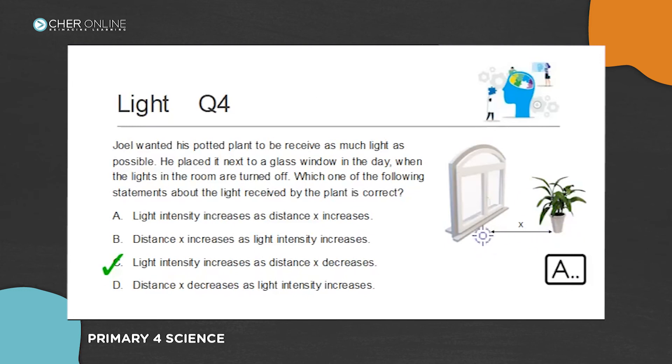So when the plant goes closer to the window, the light intensity will be greater, which means it will receive more light as it is brighter. The answer is C.